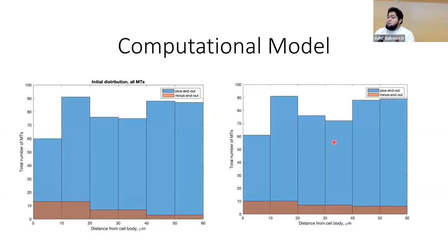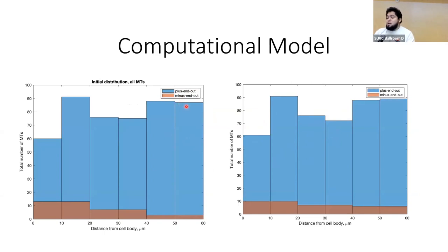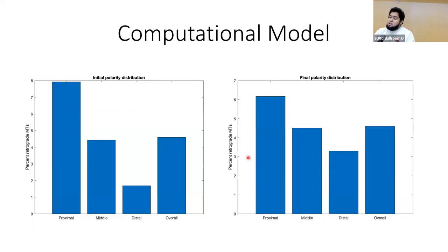The computational model simulates two specific populations: plus-end-out microtubules, which move to the right side, and minus-end-out microtubules, which move to the left side of the axon. This bar graph represents the distribution or population of microtubules — the blue bars are those moving right, and the orange bar graph represents those moving to the left. The second bar graph represents a specific polarity distribution. Proximal refers to microtubules closer to the cell body, and distal refers to microtubules closer to the axonal terminal.